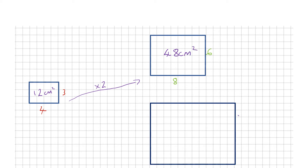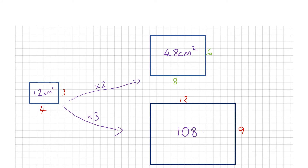There is a relationship here. Looking at the rectangle at the bottom, the length is 12 and the breadth is 9. Hopefully you can see that we've enlarged by a scale factor of 3. So we would expect the area to be 3 times bigger, but we can see it's much bigger than 36 centimeters squared. The area inside is actually 12 times 9, which is 108 centimeters squared.